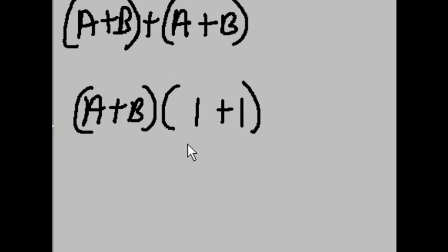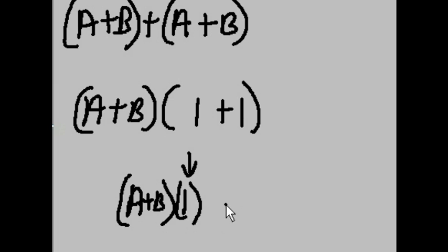And this leaves me with 1 ORed with 1. Well, that's an OR gate, so a 1 ORed with a 1 will give me a 1. So now I have A or B ended with 1. Anything ended with 1 will be itself. Any variable ended with 1 will be that variable. So the answer is going to be A or B. And that's the answer.